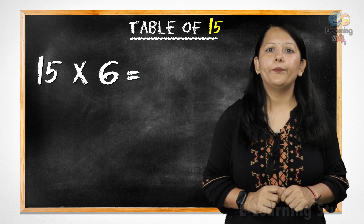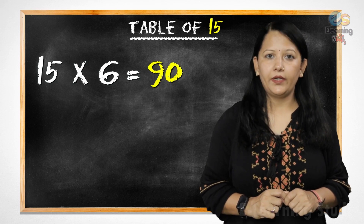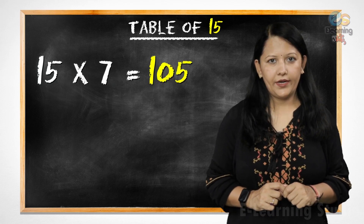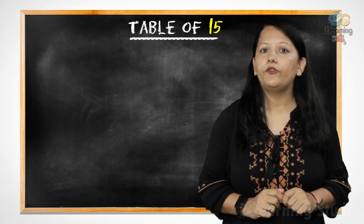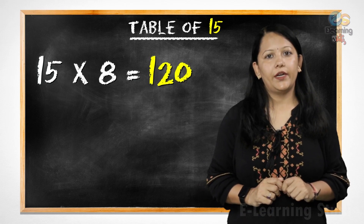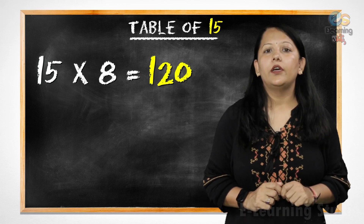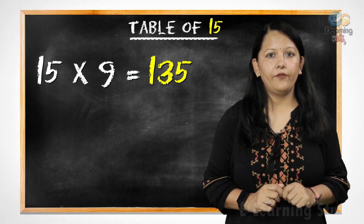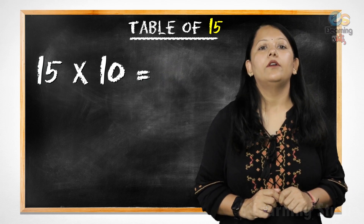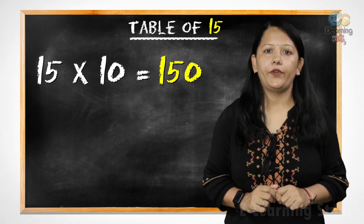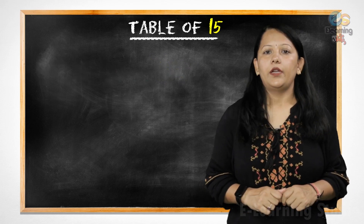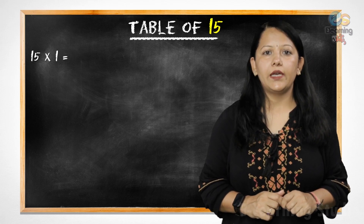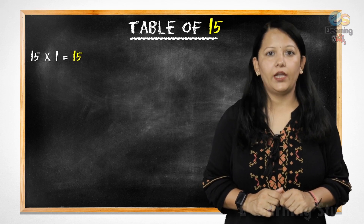15 fives are 75, 15 sixes are 90, 15 sevens are 105, 15 eights are 120, 15 nines are 135, 15 tens are 150. Now let's revise it. 15 ones are 15.